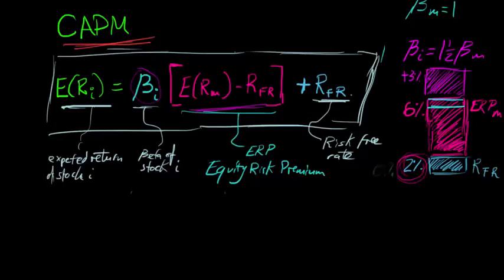And the risk free rate is a constant, and the beta times the equity risk premium is the slope of the line. And the beta is how far along the line we need to go to find the expected return of this individual stock.